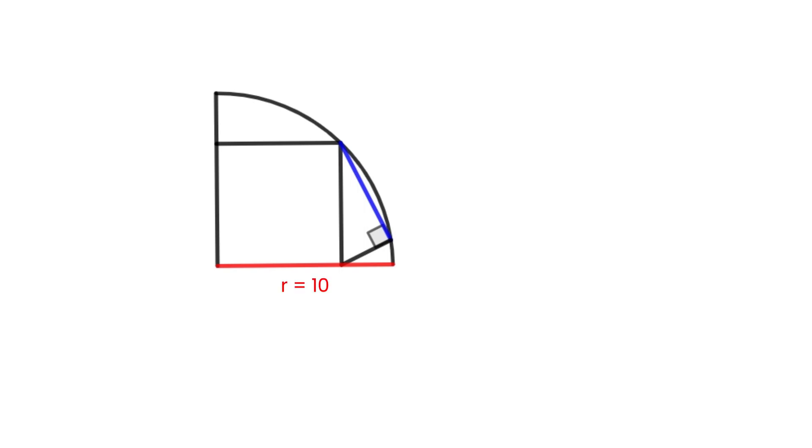The radius of a quarter circle is 10 units. There's a square inside. One side of the square and a point on the circle form a right triangle. What is the length of the blue segment?